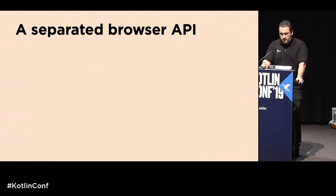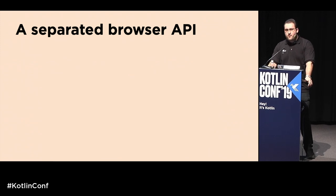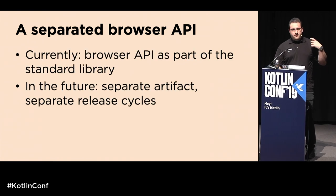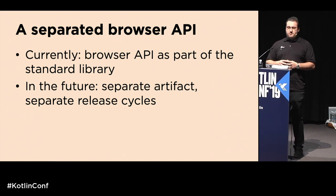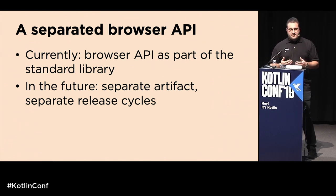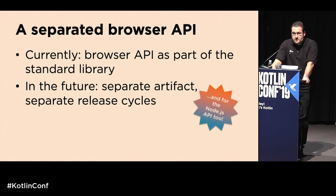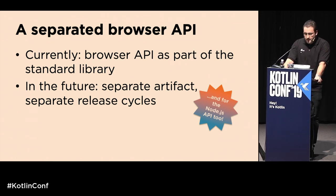These browser API declarations have shipped with each Kotlin version, but since browser APIs change on a different schedule, they'll now be encapsulated as a separate artifact — just pull it in from Gradle and get the same functionality. We've also recently brought out type-safe access to the Node.js platform APIs, available as another Gradle artifact you can pull in and use from Kotlin.